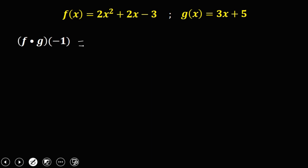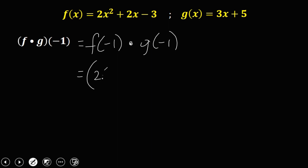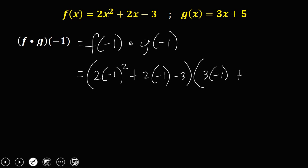So another problem. This equation is equal to f of negative 1 times g of negative 1. Our x is equal to negative 1, so we just have to substitute. Since this is a multiplication, we put the two functions inside parentheses. So for f of x: 2 times negative 1 squared, plus 2 times negative 1, then minus 3. Then for the second function: 3 times negative 1, then plus 5.